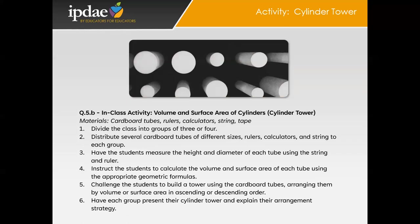Our next activity is the Cylinder Tower activity. The Cylinder Tower activity is an engaging and interactive way to teach students about the volume and surface area of cylinders. By working with real-world objects and constructing a tower, students will apply their knowledge of geometry in a hands-on and collaborative context. Begin by dividing the class into groups of three or four. Gather the necessary materials: cardboard tubes of various sizes, rulers, calculators, string, and tape.